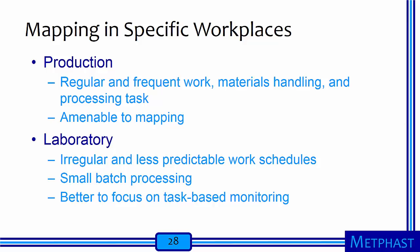Hazard mapping can be extremely useful; however, one must consider its use in specific workplaces. In production facilities with regular and frequent work, materials handling, and processing tasks, one can reasonably expect that concentrations will be temporally stable, and such facilities are amenable to hazard mapping. However, facilities with irregular and less predictable work schedules, like the research laboratory, have small batch processing that leads to high temporal variability in concentrations. Temporal variability introduces substantial uncertainty in hazard mapping, so it is sometimes better to focus on task-based monitoring.